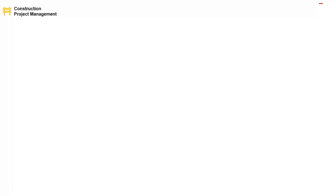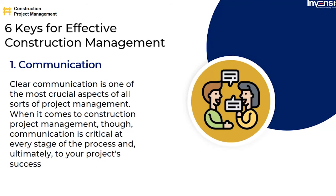The six keys to effective construction project management begin with Communication. Clear communication is one of the most crucial aspects of all sorts of project management. In construction, communication is critical at every stage of the process. When planning and implementing a build, it's critical to promptly communicate both good and bad news. Building a communication flow with everyone — whether in the field or in the office — ensures transparency, makes the process run more smoothly, and reduces the number of emails and phone calls when challenges develop.